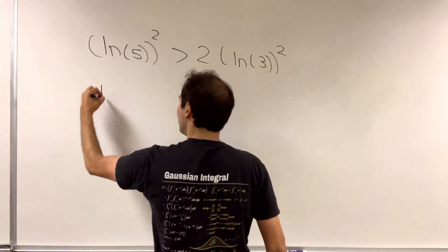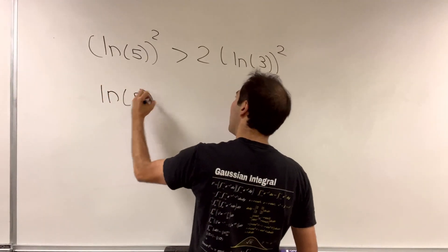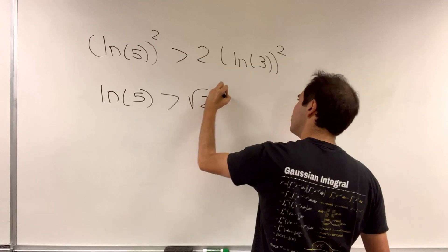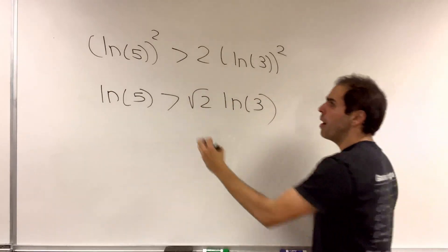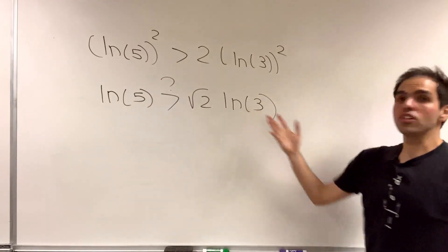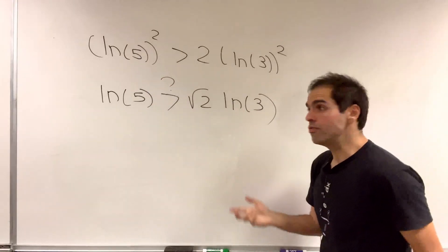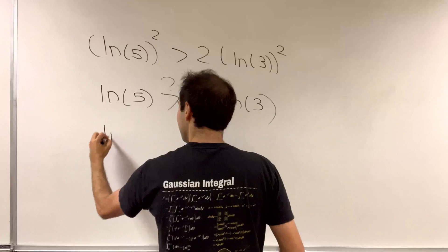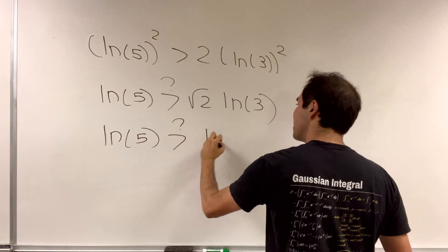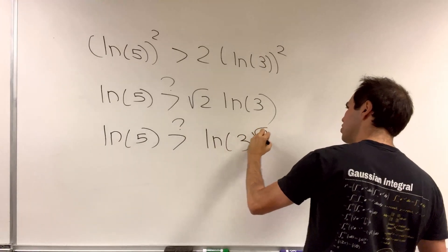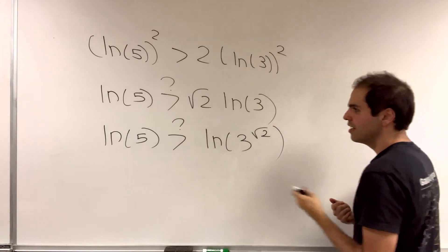Or equivalently, do we have ln of 5 is bigger than square root of 2 ln of 3? But the nice thing is, the right-hand side can also be written as an ln. So do we have ln of 5 is bigger than ln of 3 to the square root of 2?